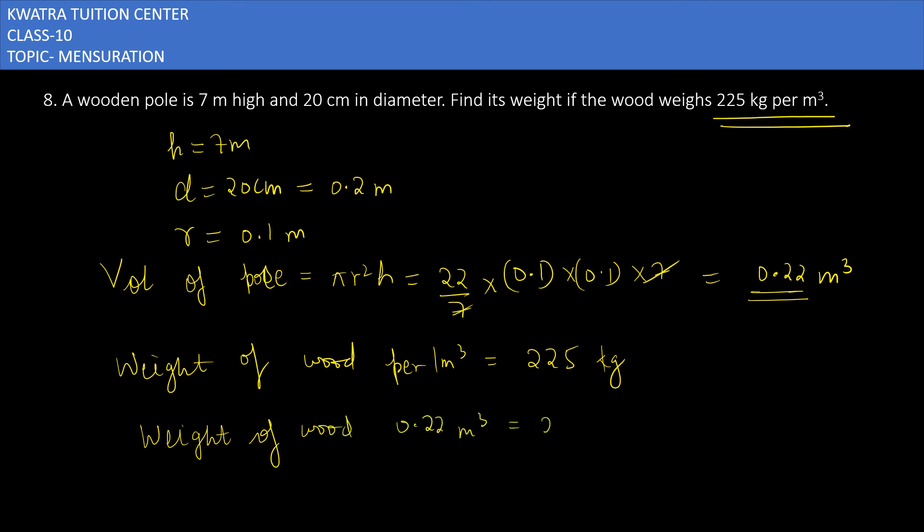0.22 × 225. Multiply 225 by 0.22 and you will get the answer as 49.5 kg.